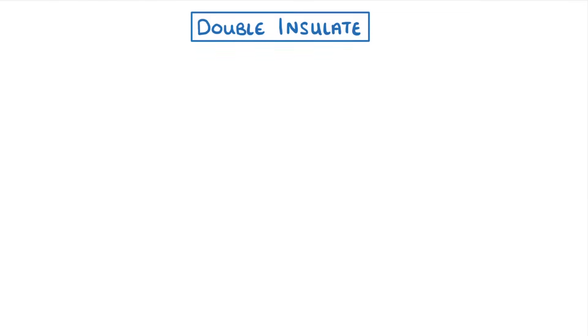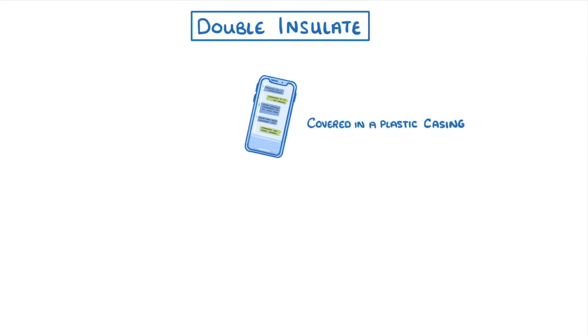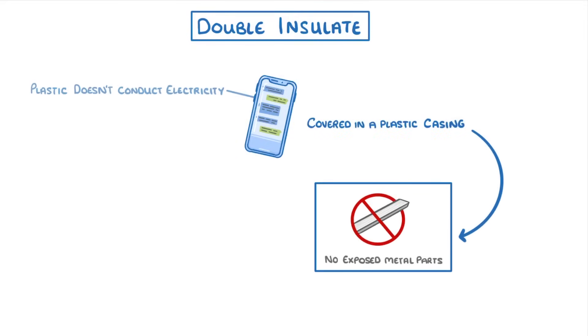Another way to prevent electric shocks is to double insulate an appliance. This is where the entire appliance is covered in a plastic casing, so that there's no exposed metal parts that we can touch. And as plastic doesn't conduct electricity, we can't get an electric shock from touching it.